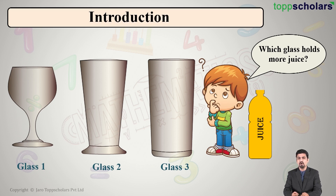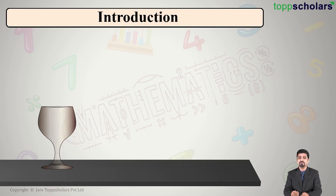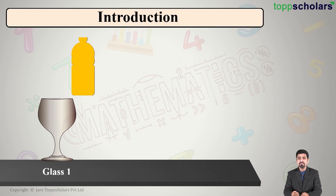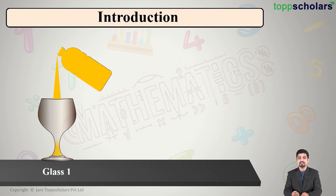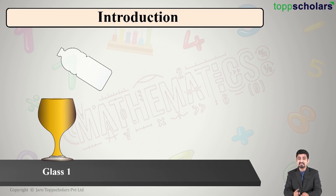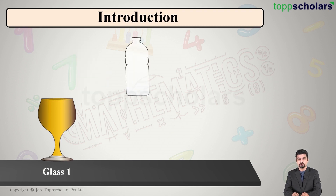What I do is I take glass number one and empty the entire bottle of juice into it. I see that one bottle of juice has completely filled this glass. So this glass holds one bottle of juice.